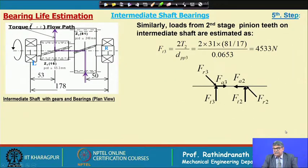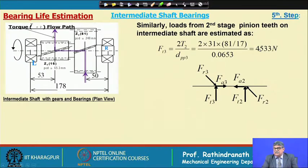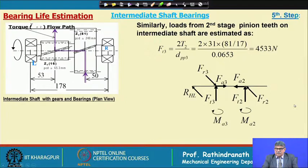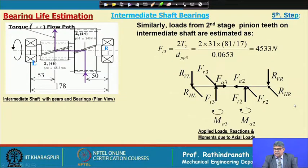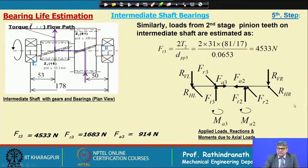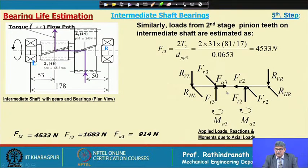If we come to the pinion, the torque remains the same, but the diameter of the pinion is much less. Therefore, the tangential force is much higher — FT3 is 4533 Newton. From that, the radial load is coming as 1683 Newton and the axial load is coming 914 Newton.